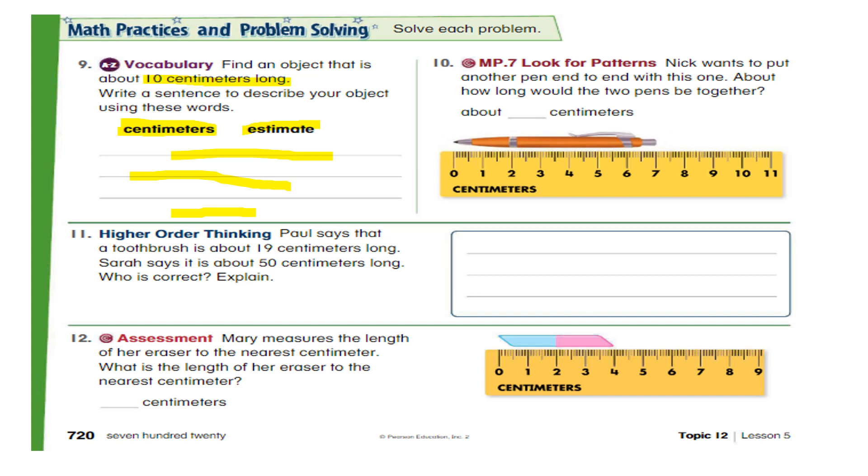So you can simply write, I estimated that a crayon is 10 centimeters long. Or anything which is 10 centimeters long, you can write about that.